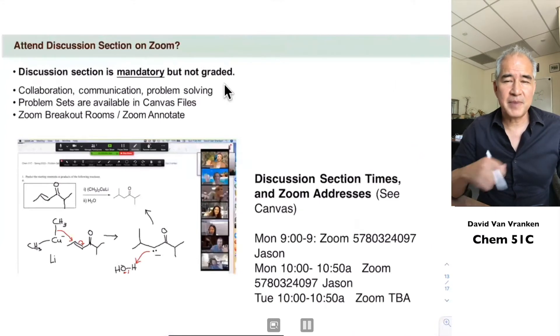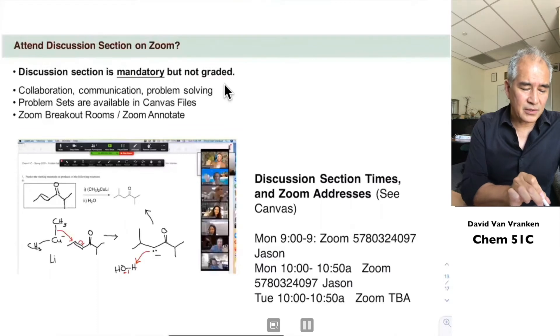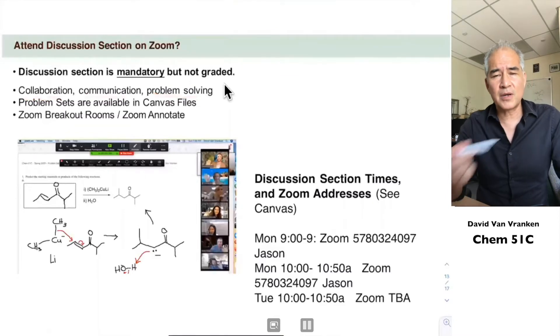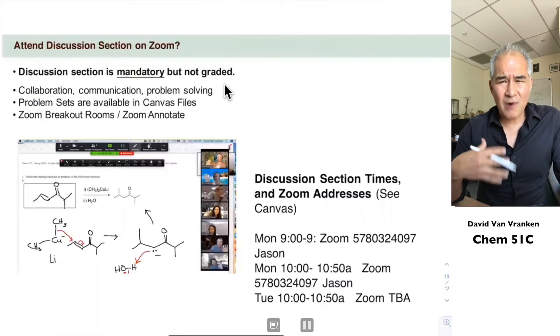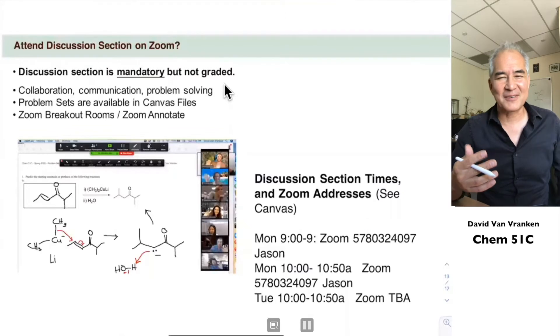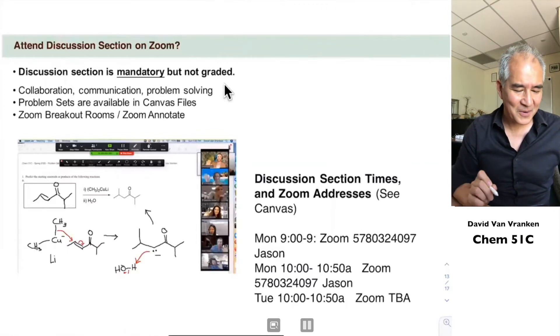Our discussion sections - I expect you to attend every single discussion section that you're assigned to. We don't take attendance in our discussion sections, but this is really where you get a chance to do the three things that are important in science: learn to collaborate and communicate and most importantly, solve problems. That's what I'm going to grade you on in my exams is your problem solving ability. If you don't practice talking about science with other people and applying scientific principles to solve problems, that's what you're supposed to be learning in college. You need to be able to talk about science with other people and collaborate with them to solve problems.